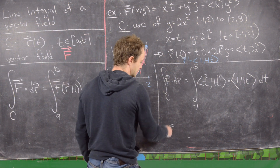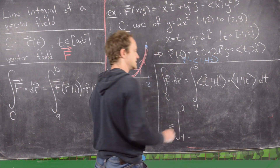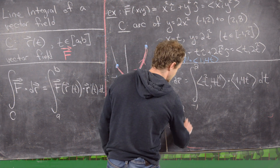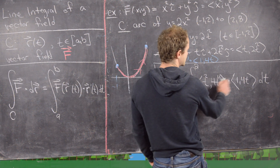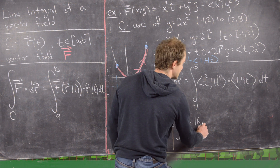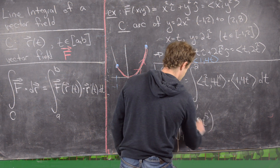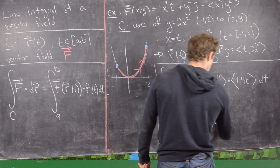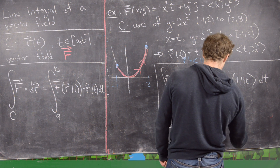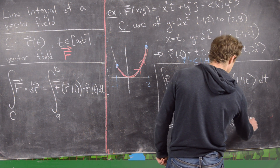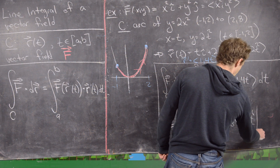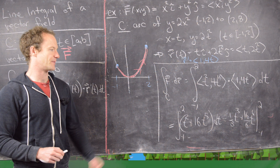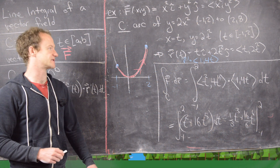Taking the dot product, we get the integral from negative 1 to 2 of t² times 1 plus 4t⁴ times 4t, which is t² + 16t⁵ dt. Integrating gives (1/3)t³ + (16/6)t⁶ evaluated from negative 1 to 2. Evaluating that gives a number — this is a fine place to stop for this example.